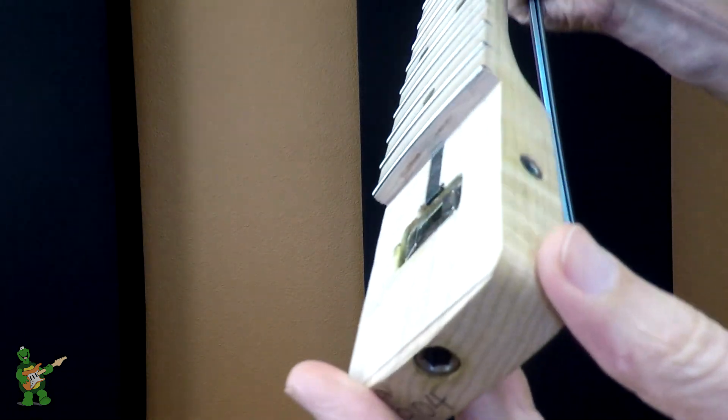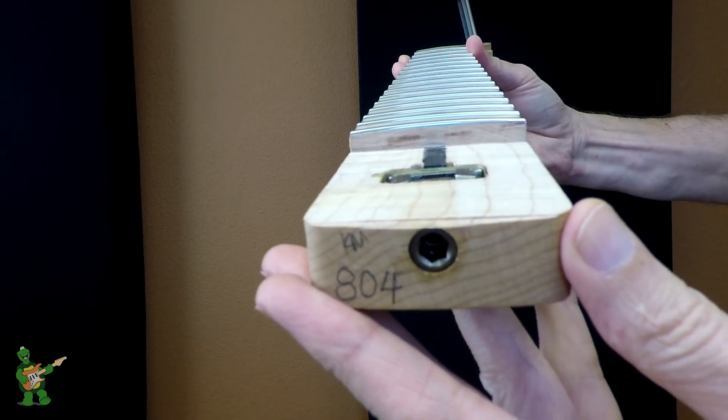Really, the cool thing about necks that come with the double truss rod and the side adjust mechanism in it is that they are ridiculously stable and they very rarely need adjustment. I have two myself and I haven't touched the truss rod in either one in years because they just don't need it.